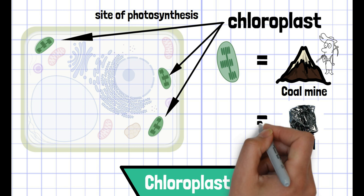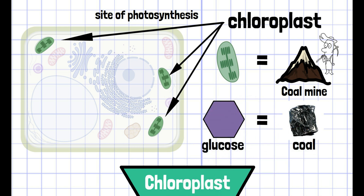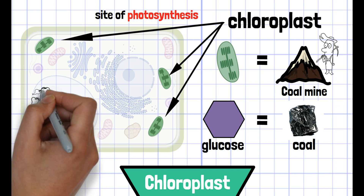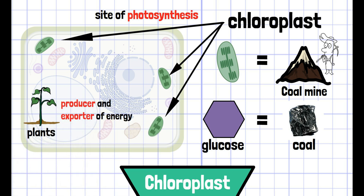In the case of organisms, that is glucose. Although animal cells must ingest glucose by feeding on other organisms, plants can produce glucose utilizing CO2 in the air because of chloroplasts. This process is called photosynthesis. Having this structure allows plants to obtain nutrient sources without ingesting anything like animals. Only plants have this structure, so plants can be said to be the producer and exporter of energy.